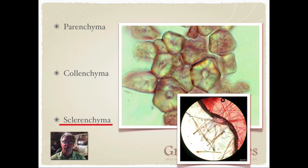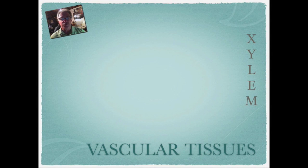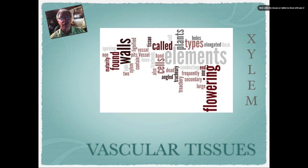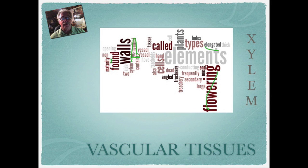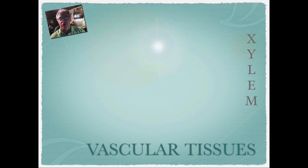So that's sclerenchyma for support, collenchyma for flexibility and growth, and parenchyma for daily maintenance and repair. That takes us to the next level: vascular tissues. We're going to look at phloem and xylem, starting with xylem. Some associated words for vascular tissues include cell walls, pits, lignified, found in flowering plants, and elongated.